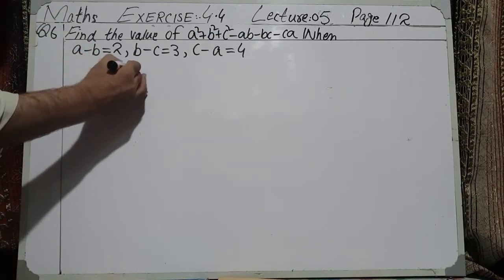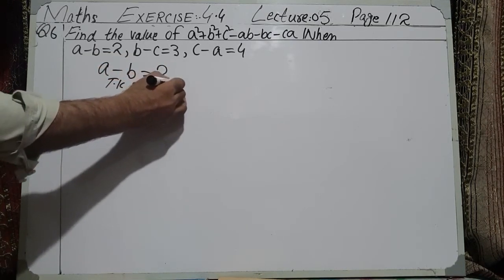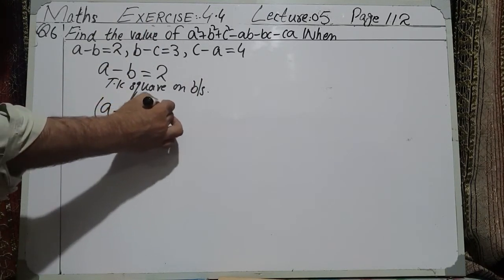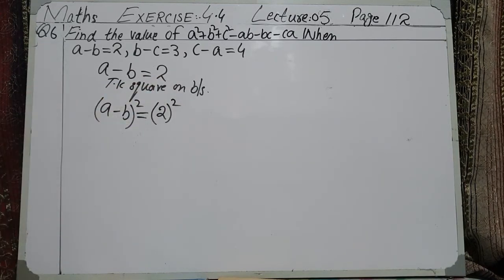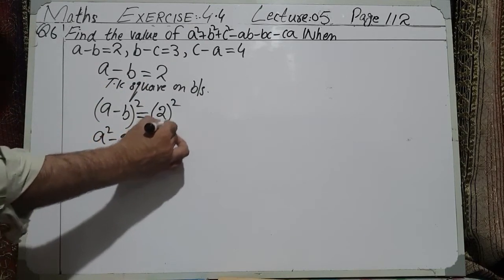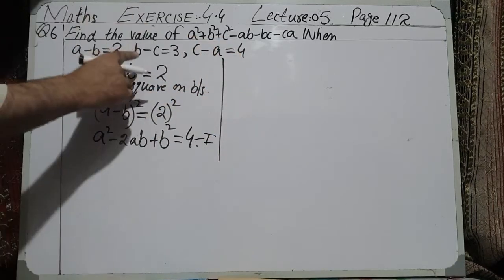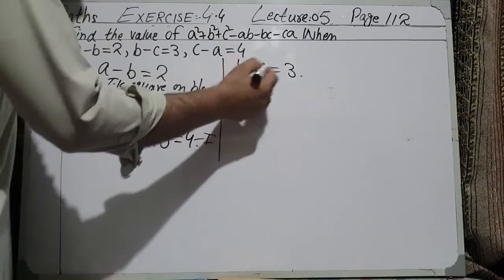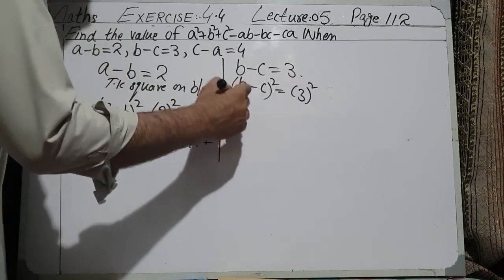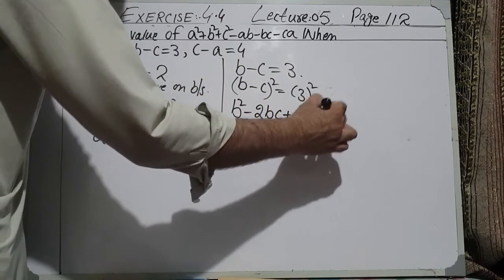Given A minus B equals 2, we take square on both sides. So A minus B whole square equals 2 whole square, which gives A square minus 2AB plus B square equals 4. Similarly, B minus C whole square equals 3 whole square, so B square minus 2BC plus C square equals 9.